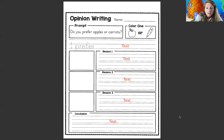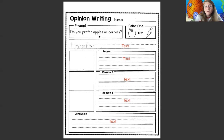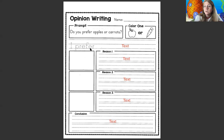All right, we are going to discuss this now and figure out how we can write this. This is an opinion writing. This means that we need to give our opinion on something. It's asking: do you prefer apples or carrots? You have to pick one. Do you prefer apples? Do you prefer carrots? You're gonna pick, then you're gonna write a sentence — I prefer apples or carrots — pick one and put it right there.